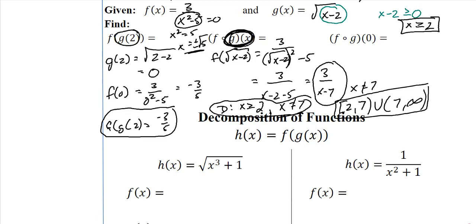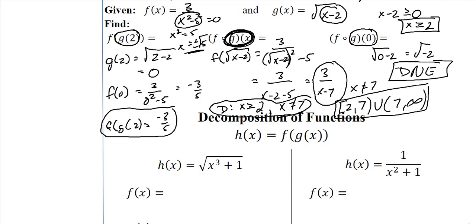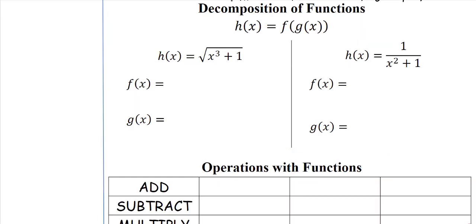For the last part of this example, I plug 0 into g: g of 0 is the square root of negative 2. I can't have a square root of a negative number, so this answer does not exist. That's what it means when you plug in a number and it doesn't work — it just does not exist.